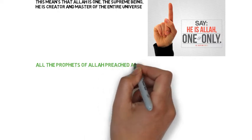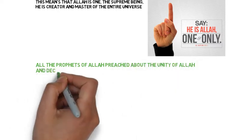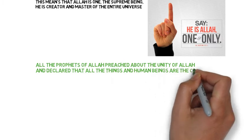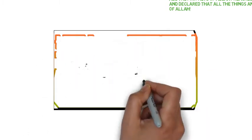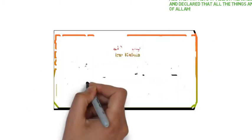All the prophets of Allah preached about the unity of Allah and declared that all things and human beings are his creations. This is expressed in the declaration La ilaha illallah Muhammadur Rasulullah.